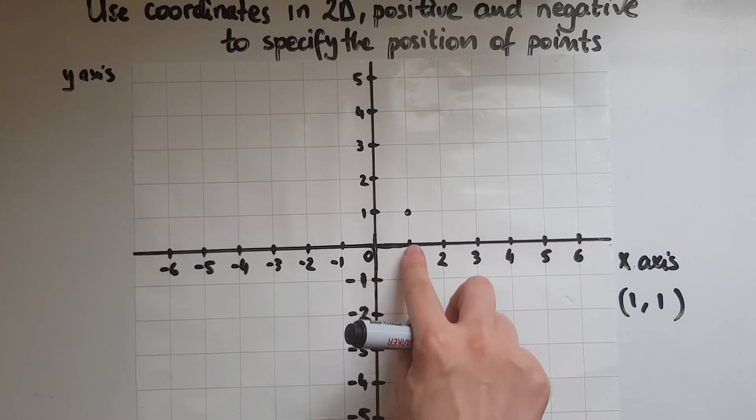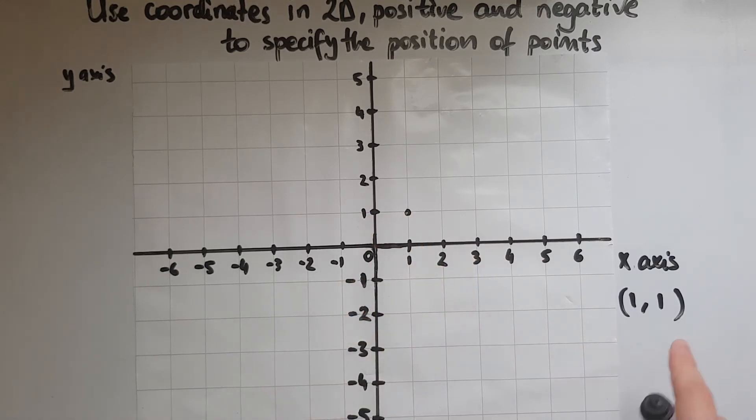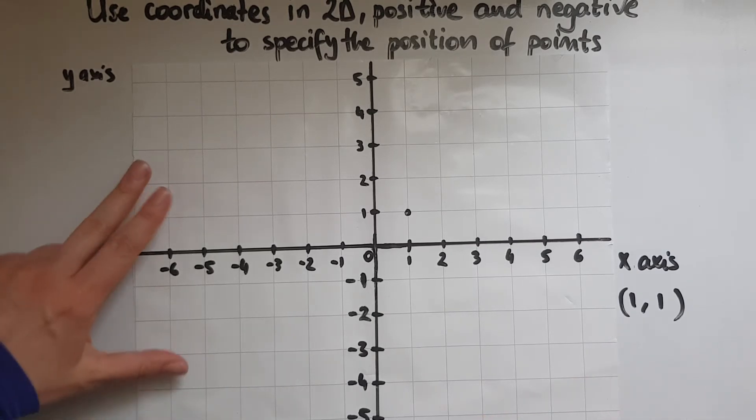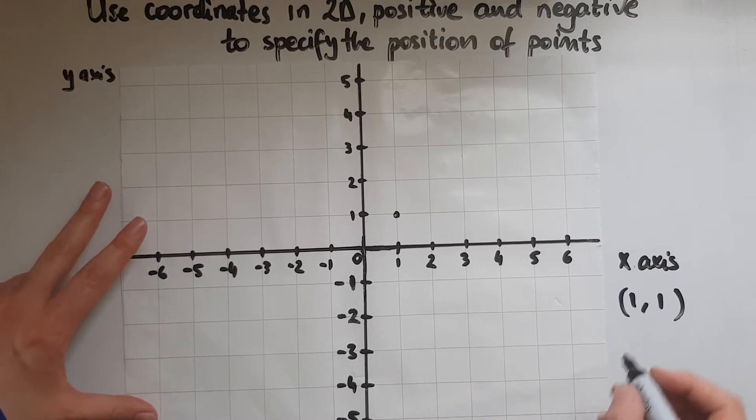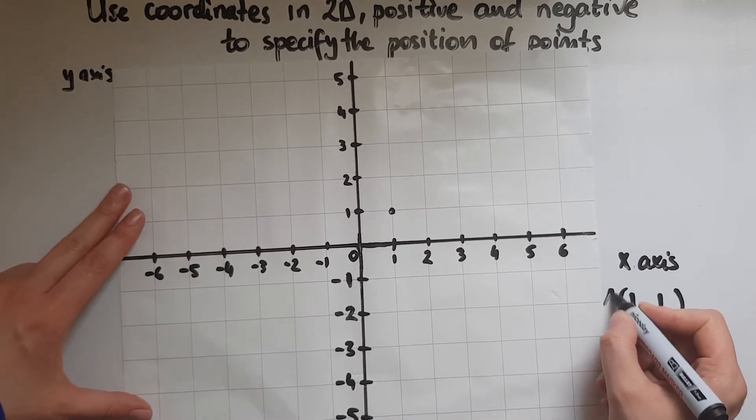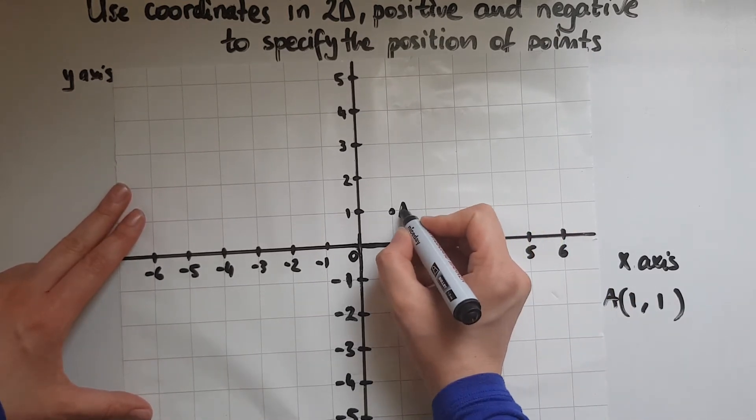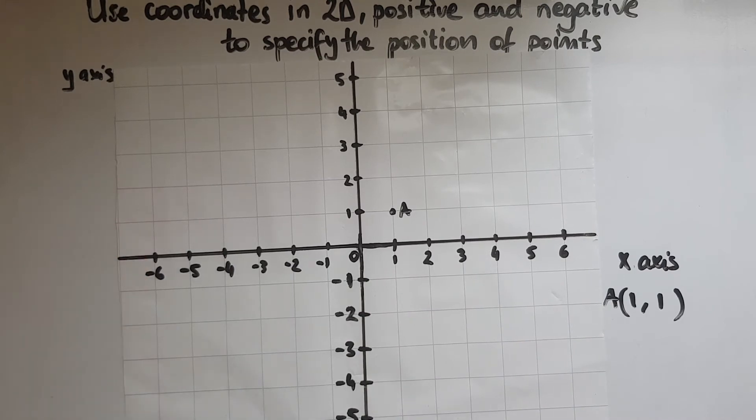As you can see, the x is equal to 1 and the y is equal to 1, just like this is saying. This is what we're going to call point A. Let's label that.